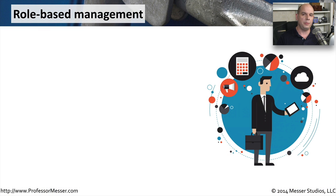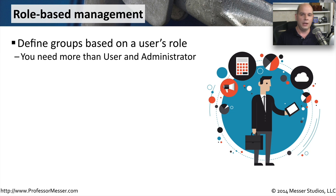One of the challenges for a security professional is assigning the right roles to the correct resources. We have so many different resources on our networks — printers with certain permissions, and files and folders on servers with many different permissions depending on who needs access. We usually assign access based on someone's role, which is much easier than taking each individual person and assigning individual rights and permissions to all those different resources.